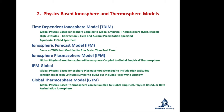The next topic is physics-based ionosphere and thermosphere models. During my 50-year academic career, I've been involved in the development of five global physics-based models of the ionosphere and thermosphere. The first was the Time-Dependent Ionosphere Model (TDIM), a global physics-based ionosphere model coupled to a global empirical thermosphere model — the MSIS atmospheric model. At high latitudes, you have to specify the convection electric field and auroral precipitation patterns as a function of time.